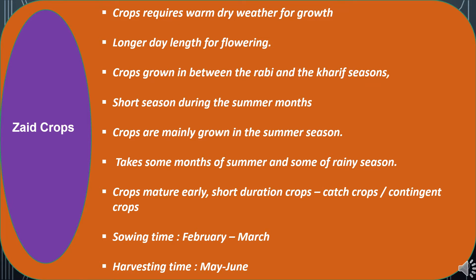The third are Zaid crops, which require warm dry weather for growth and a longer day length for flowering. These crops are grown in between Kharif and Rabi seasons during the short summer months, so they have a short duration. They are mainly grown in summer, taking some months of summer and some months of the rainy season. Zaid crops mature early due to their short-duration nature and are mainly grown as catch crops or contingent crops. Sowing time ranges from February to March and harvesting from May to June.